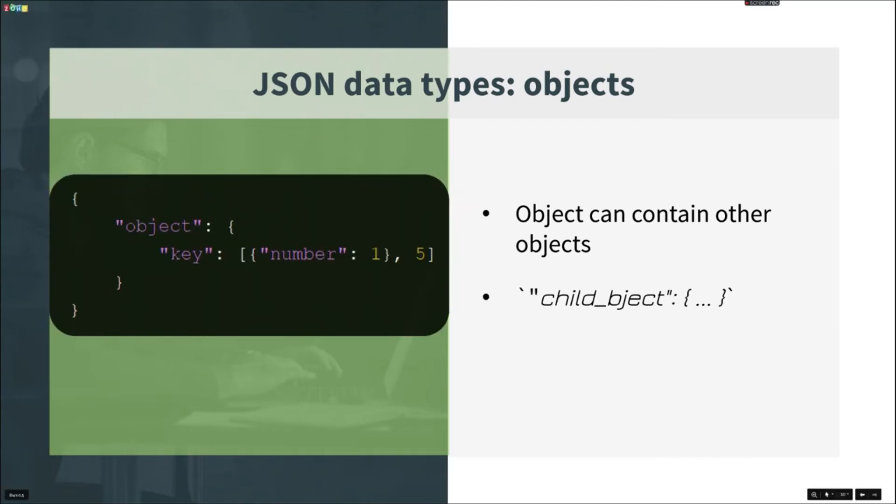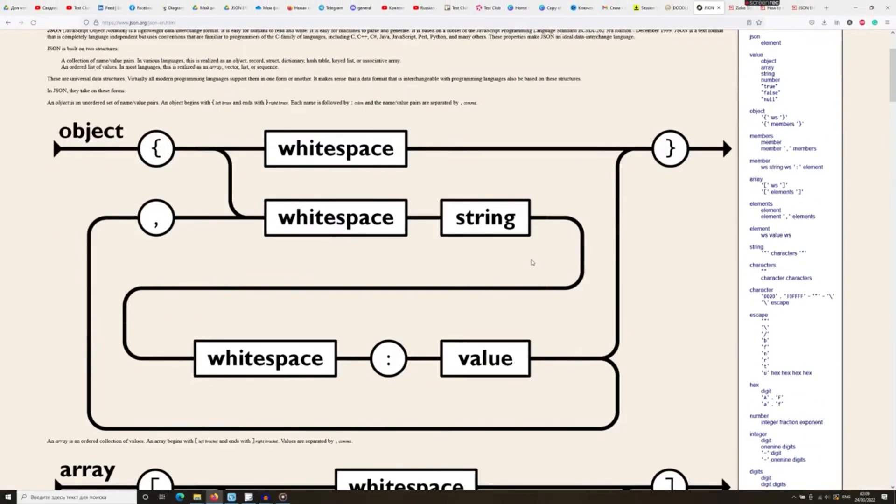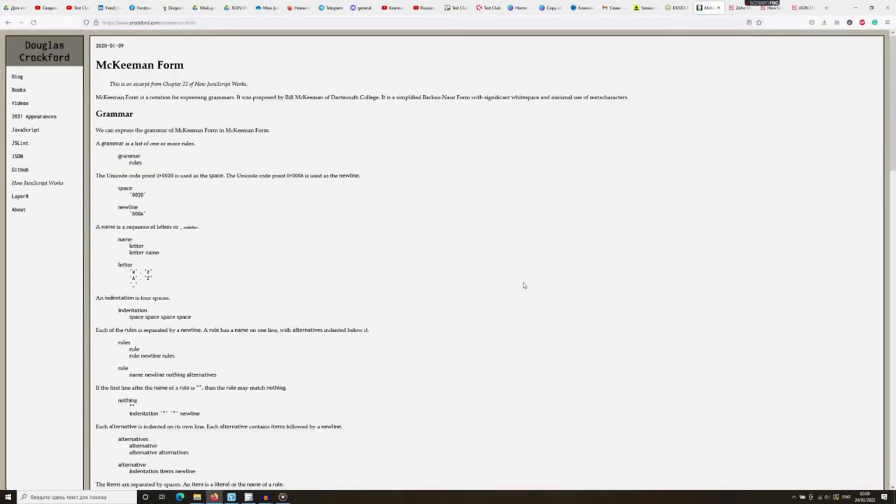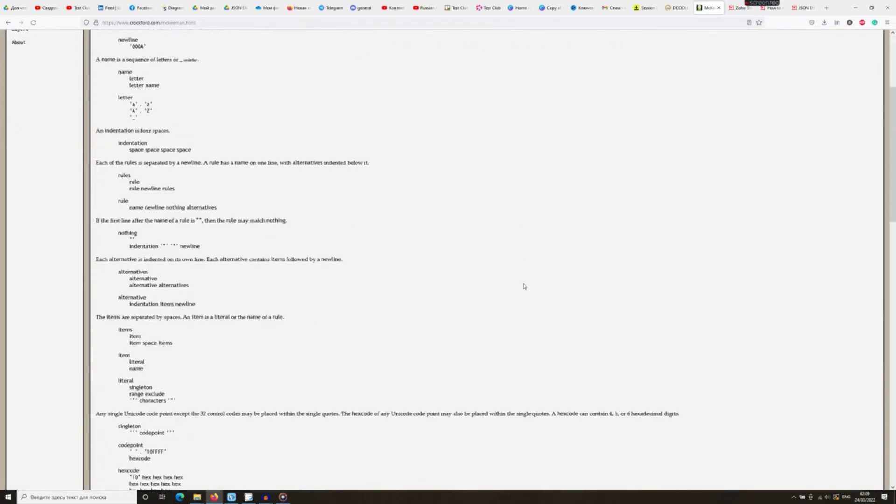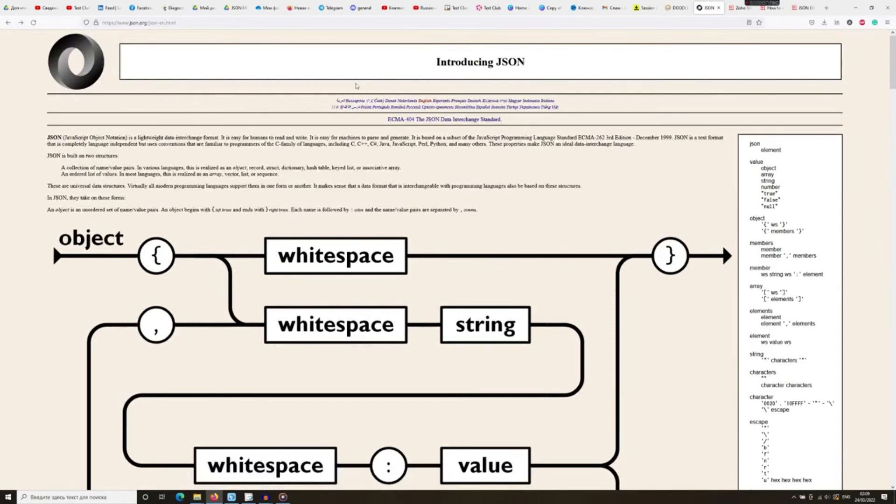This is the most important information about JSON. However, there are many other interesting things, such as special characters, different ways to present numbers, etc. If you want to know more about that, feel free to check out the official JSON documentation. I have put the link to official JSON documentation in the description. This documentation is translated to many languages and is clear and detailed.